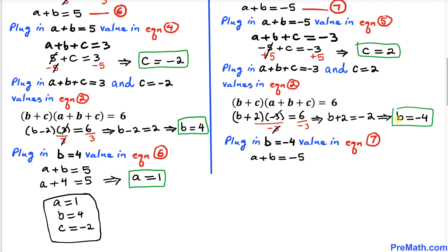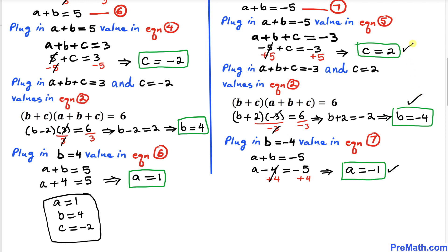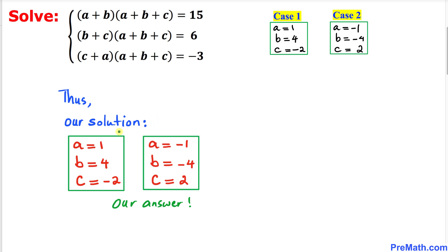Finally, we plug b = -4 into equation 7: a + (-4) = -5, so a - 4 = -5. Adding 4 to both sides, a = -1. Thus our Case 2 solution is a = -1, b = -4, c = 2. Those are our two sets of solutions. Thanks for watching and please don't forget to subscribe to my channel for more exciting videos!